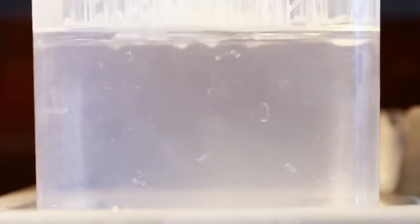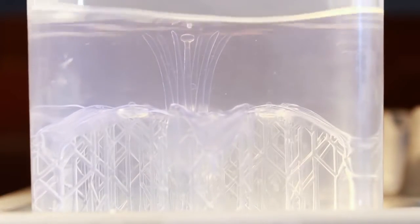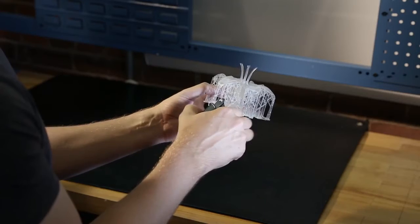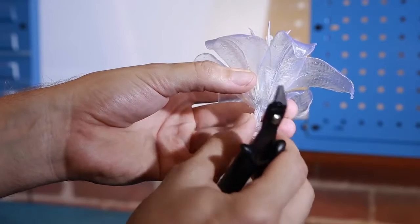We'll take our print out and wash it in rubbing alcohol to get the excess resin off. The flower comes with supports on it and we'll snip them off to finish the piece.